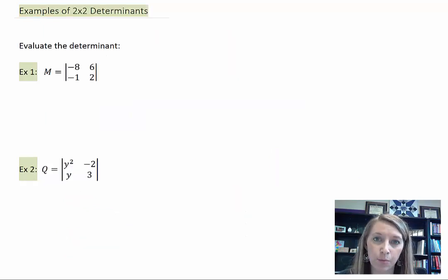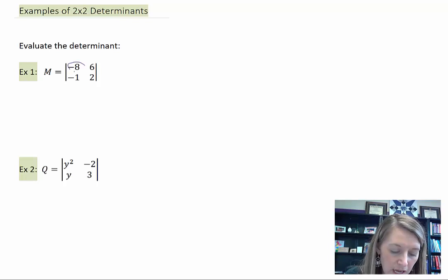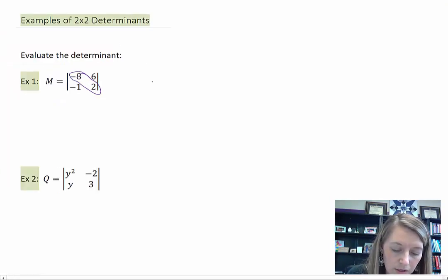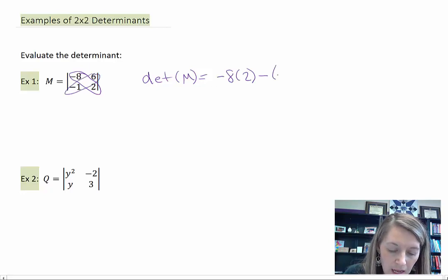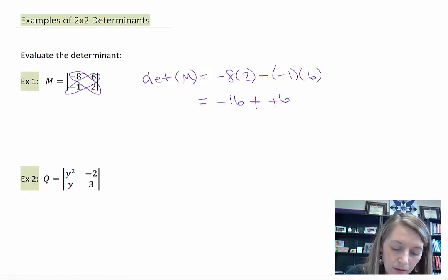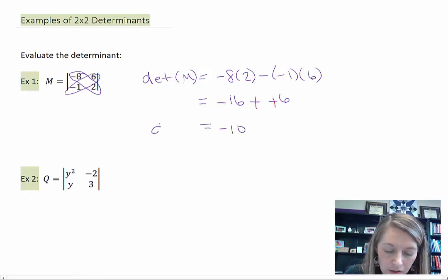I have a couple of examples here. I encourage you to pause the video and try and find the determinant of these on your own. The first one is pretty easy. You just take negative 8 times 2. The determinant of M is negative 8 times 2, and you subtract negative 1 times 6. That gives you negative 16 minus negative 6. Be careful of the negatives. The minus negative becomes positive, and so that gives you negative 10. The determinant of M is negative 10 here as well.